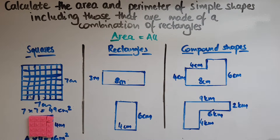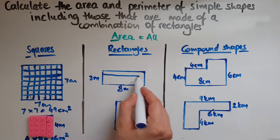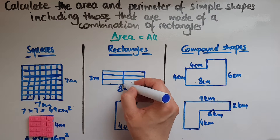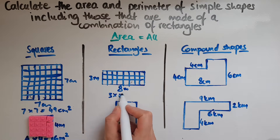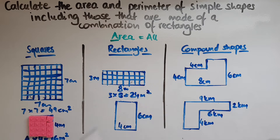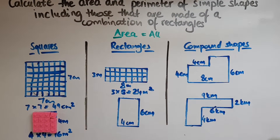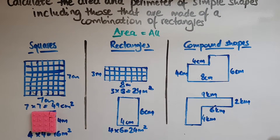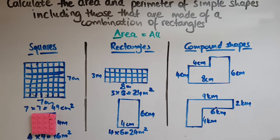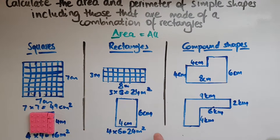Notice how both rectangles have the same area even though they're different shapes, because eight times three equals 24 and six times four also equals 24.